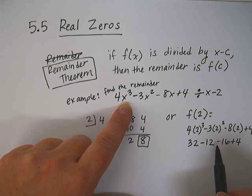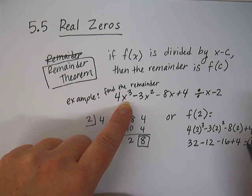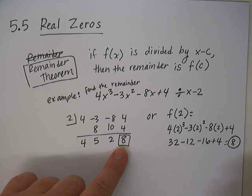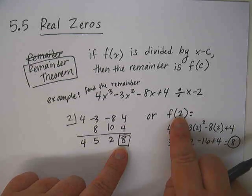8 times 2 is 16. Combine like terms, well, just add and subtract the numbers. 32 minus 12 is 20, minus 16 is 4, and 4 plus 4 is 8. We got the same answer. So how would this particular theorem be useful?